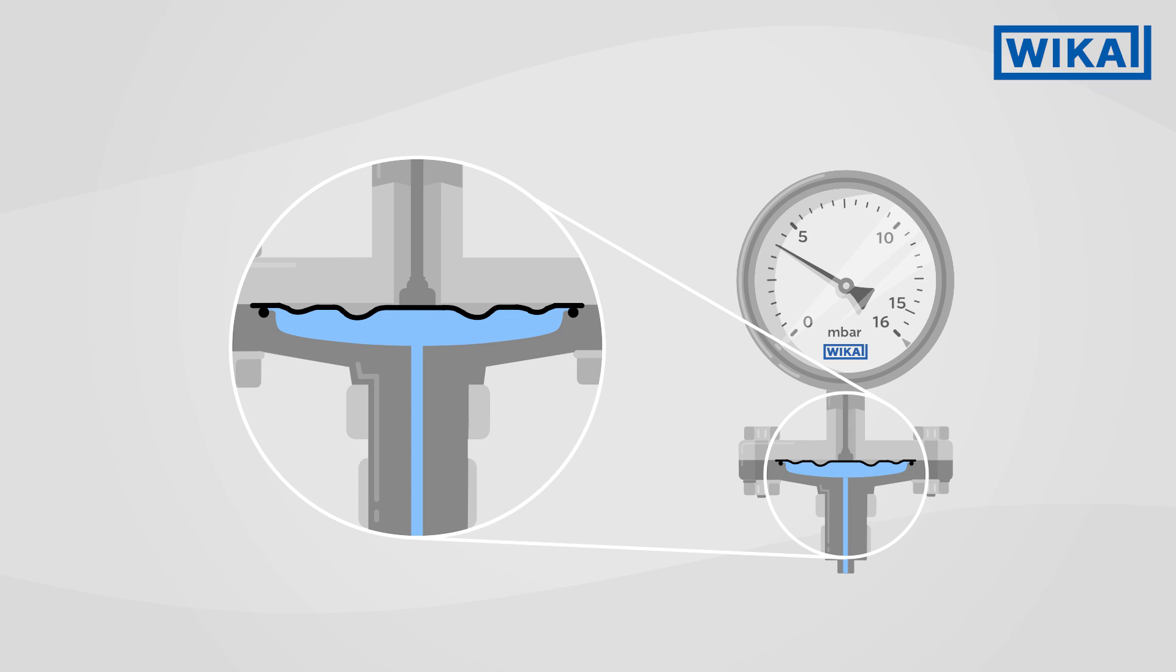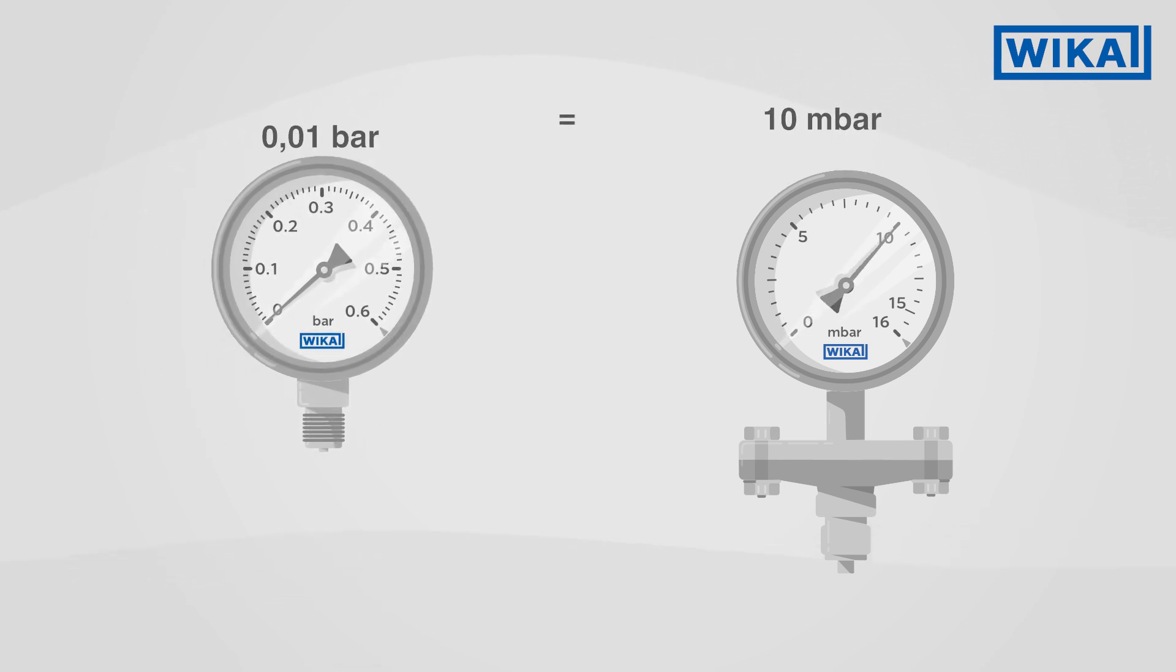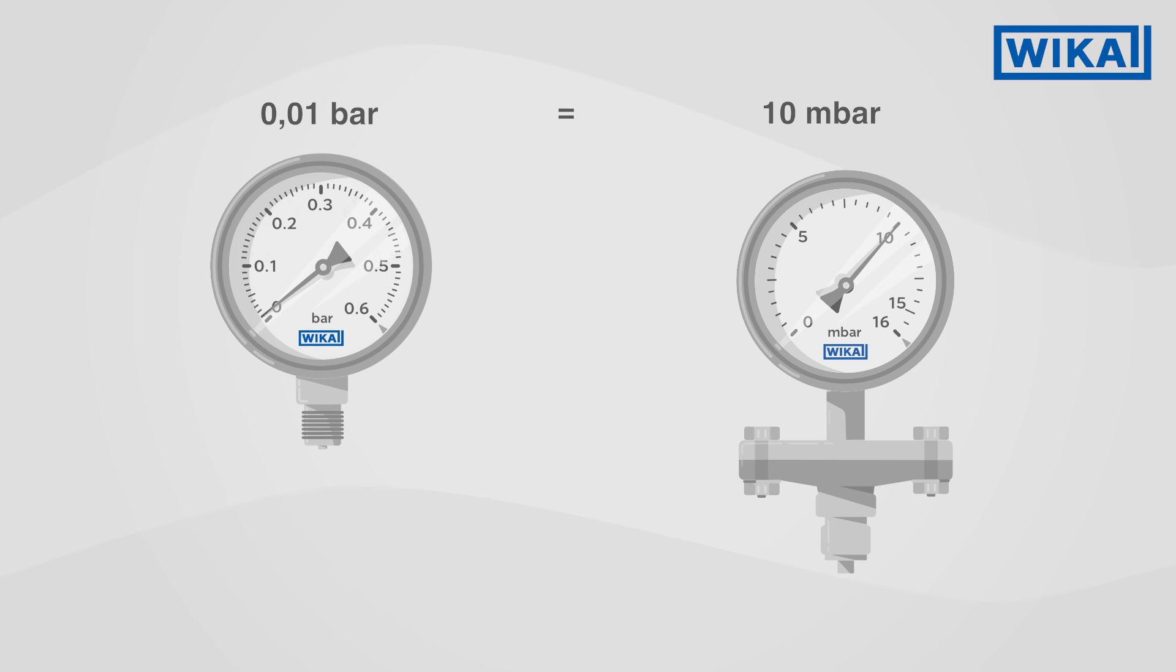Diaphragm pressure gauges show their strengths, for example, when measuring low pressures. Due to the large diaphragm surface, measuring ranges from 16 millibar are possible. For a Bourdon tube pressure gauge, on the other hand, the smallest measuring range is 600 millibar.